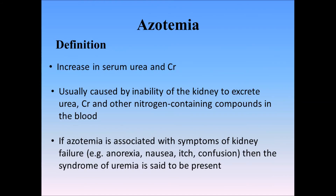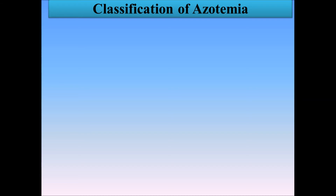If azotemia is associated with renal failure and manifests with nausea, vomiting, anorexia, confusion, pruritis, etc., it is called uremia instead of azotemia. In this case, the renal insufficiency is severe enough to require urgent dialysis due to the high risk of fatal complications like acidemia, hyperkalemia, and uremic encephalopathy.